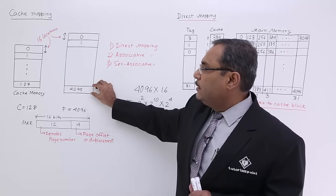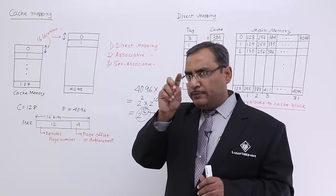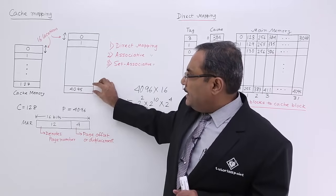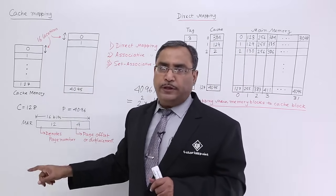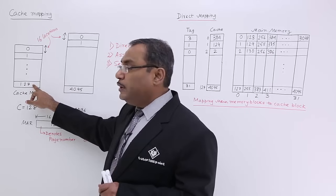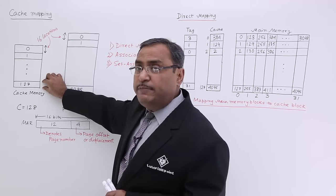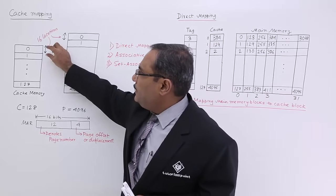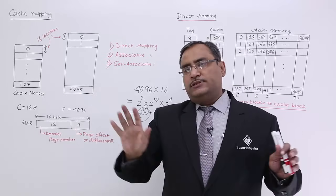If I load 16 locations' content at a time from main memory to cache memory, then for some period of time the program control will remain confined within that page. Each page is of the same size, and in the cache memory, I have divided the total cache memory into 128 frames where each frame size is equal to the page size, because when one page is loaded it fits onto a single frame. Page size equals frame size — this is always universally true.